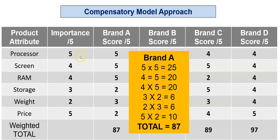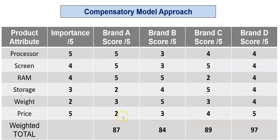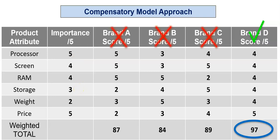The scores are constructed by simply multiplying. For brand A, five times five is 25, four times five is 20, and so on, all the way down — that adds up to 87. Brand D has the highest score, so on this approach — effectively a scoring model — we would select brand D because it's the best one overall, taking all factors into account using an importance scale. The others score fairly well but are ruled out.